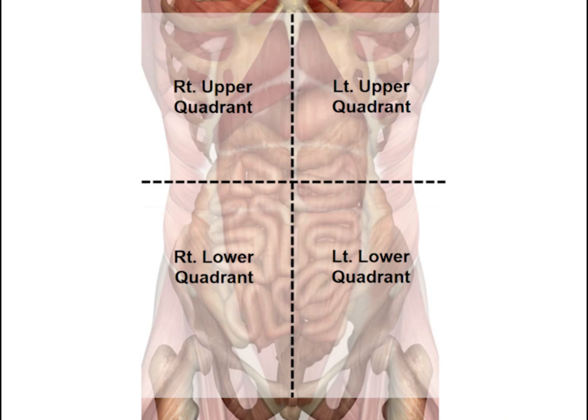The first method divides the cavity into four sections: a right upper quadrant, a right lower quadrant, a left upper quadrant, and a left lower quadrant.